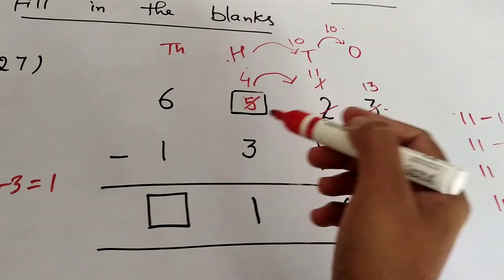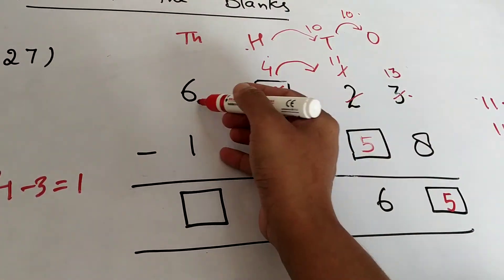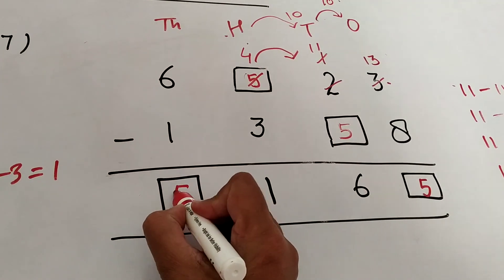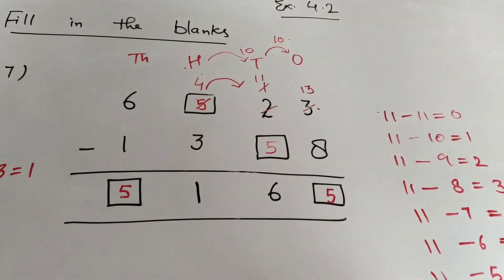And this is simple, this is 6 minus 1 is 5.